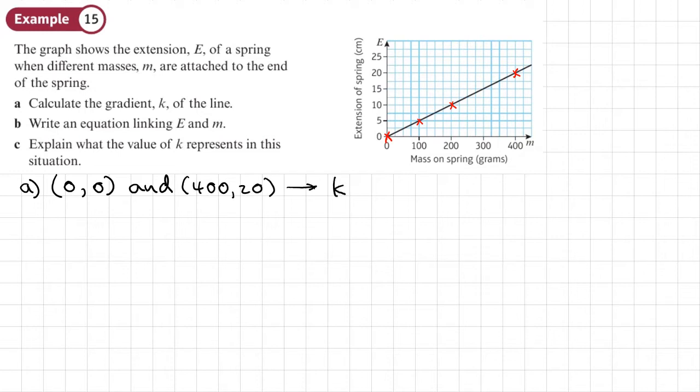So the gradient, which is k, is going to be the change in y, which is just 20, so 20 minus 0, over 400 minus 0, which is just 400. And that simplifies to 1 over 20. So we can say that k is 1 over 20.